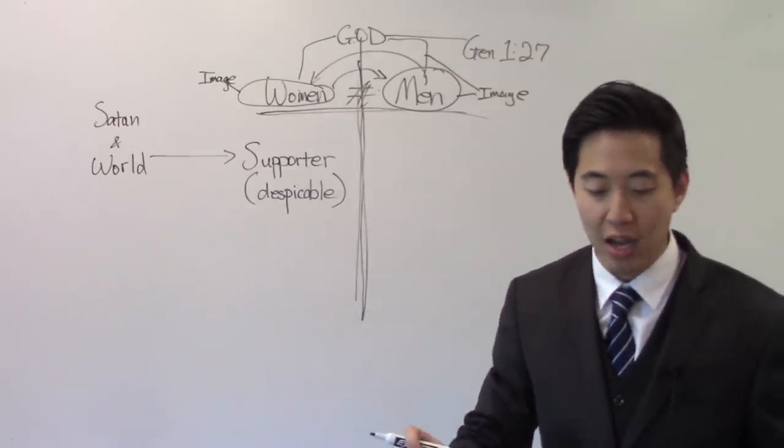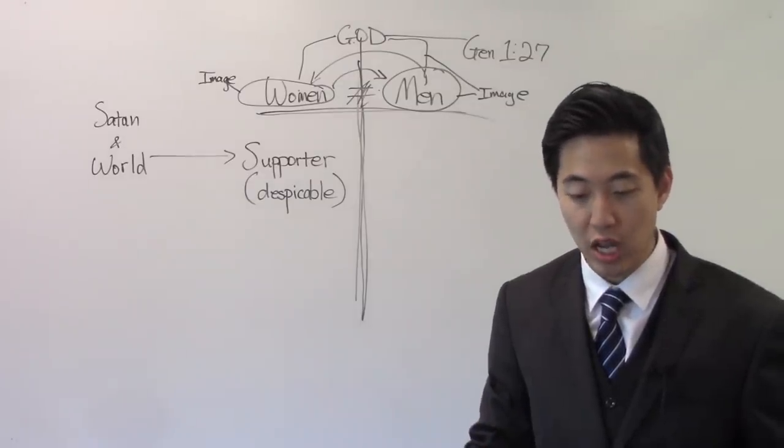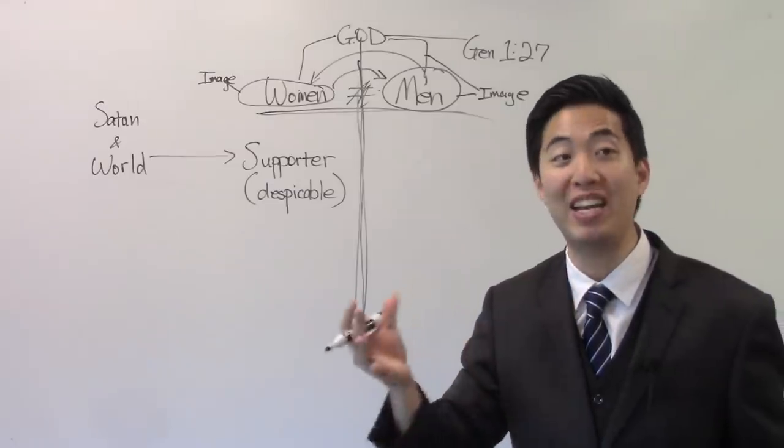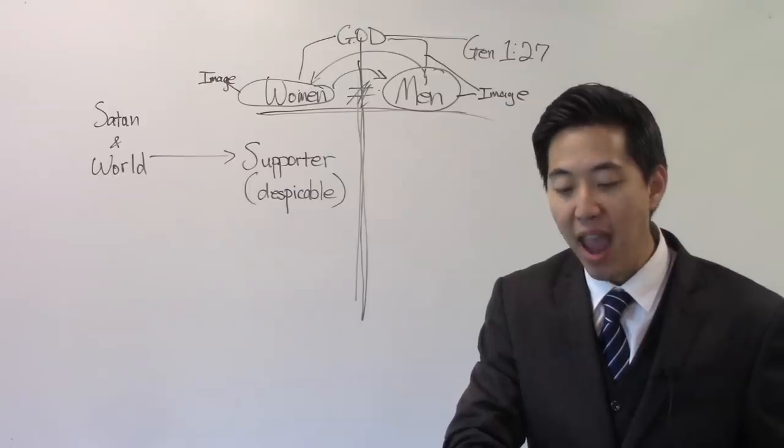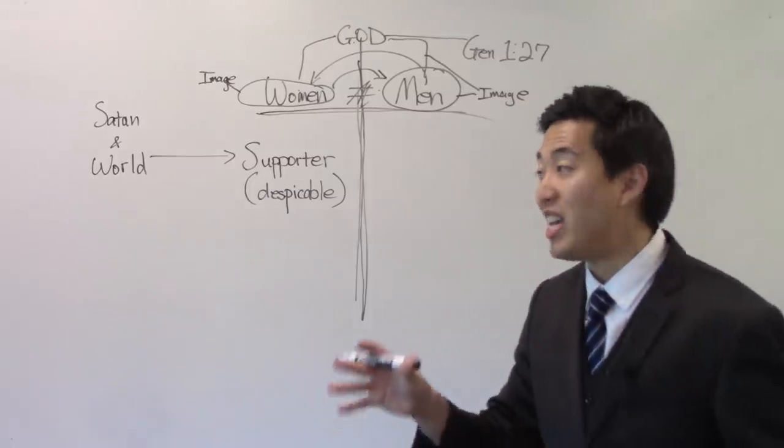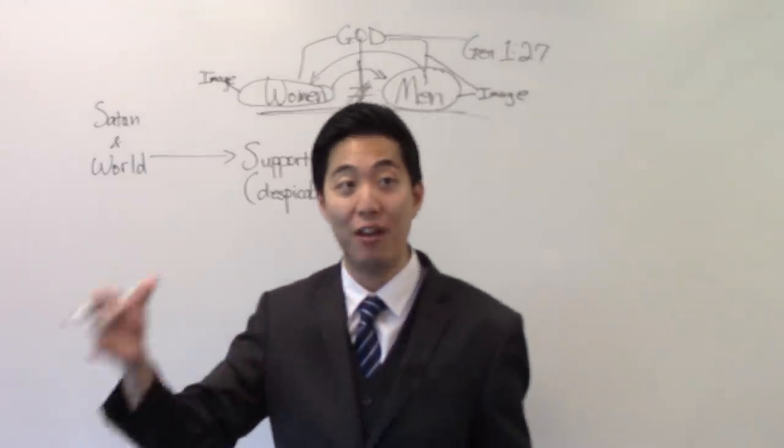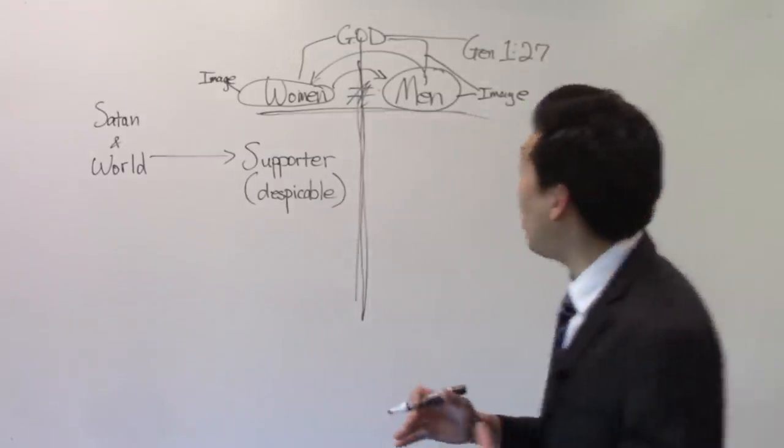So God created man, but did it stop there? No. In His own image. In the image of God created He Him. He's repeated again for man. But now look at the next part. Male and female created He them. Female, He did not create female in His own image. It just says He created female. Do you know why? Because in Genesis 1:27, people are assuming this. God created Adam and Eve at the same time.